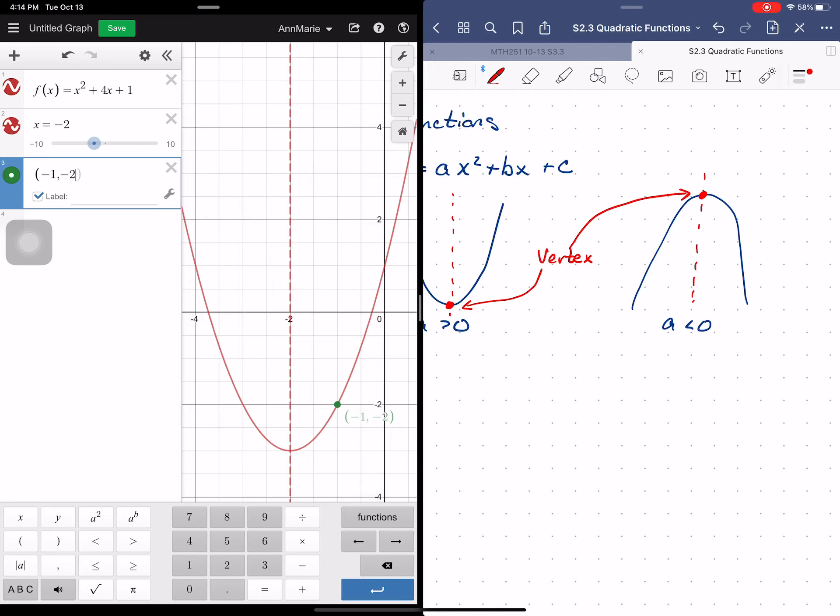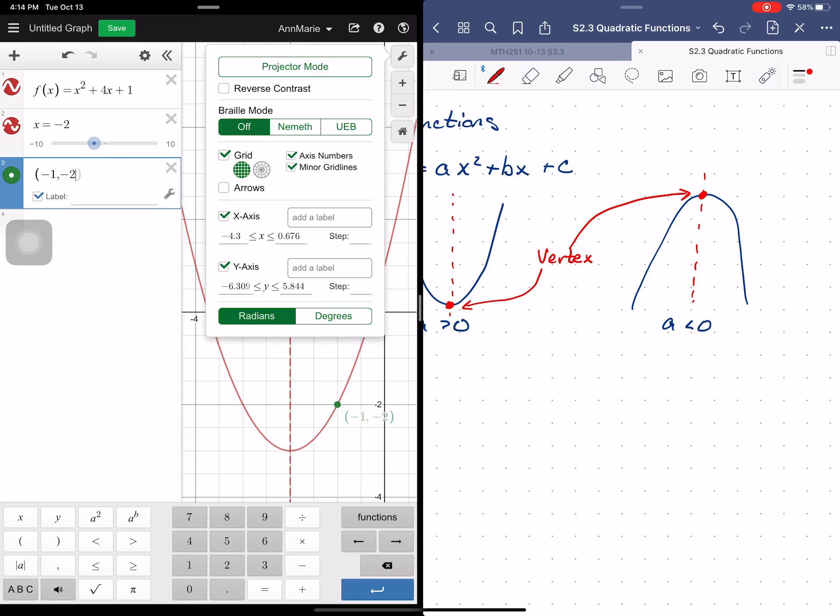I can see that that point is on my parabola. I can also see that that point is 1 unit. Let me change my grid so that it's better.